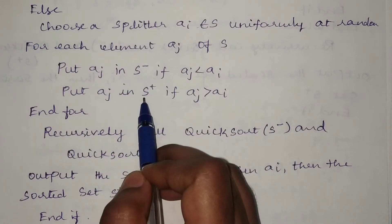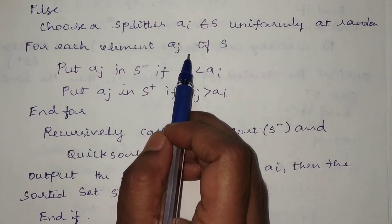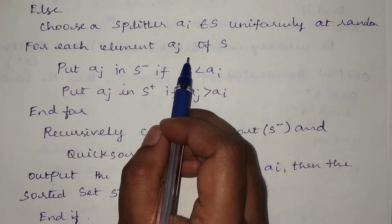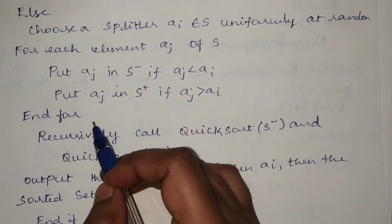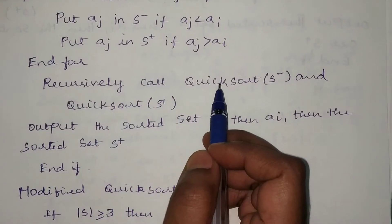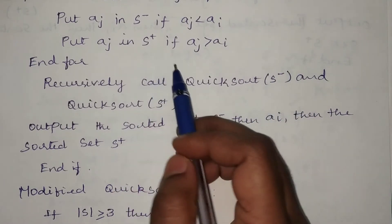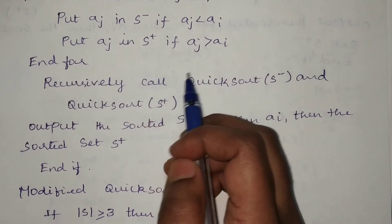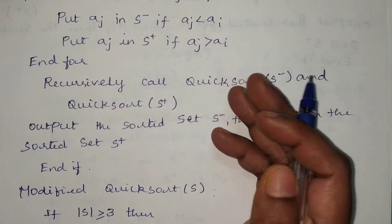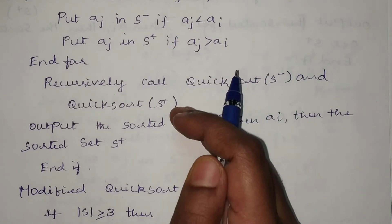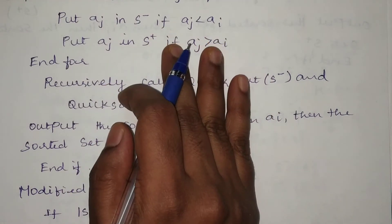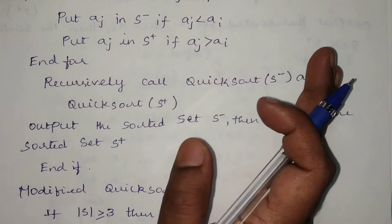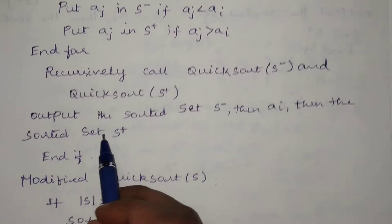The first group consists of elements lesser than the selected pivot element, and the second group consists of elements greater than the pivot element. After splitting, we recursively call quicksort on S⁻ and quicksort on S⁺. Randomization takes place only in dividing the list into two groups — that splitting step is done randomly.